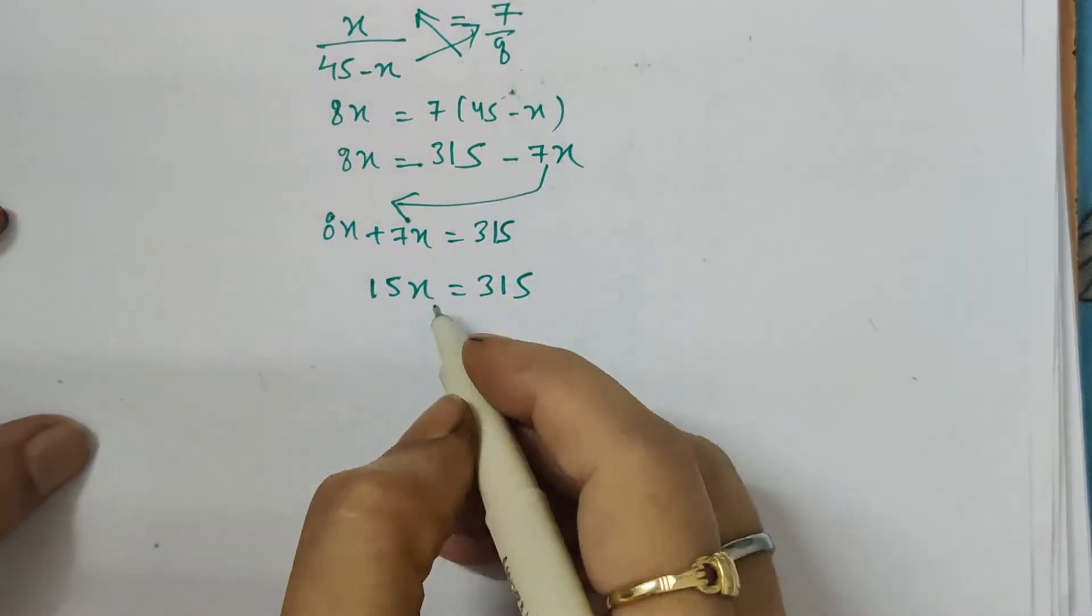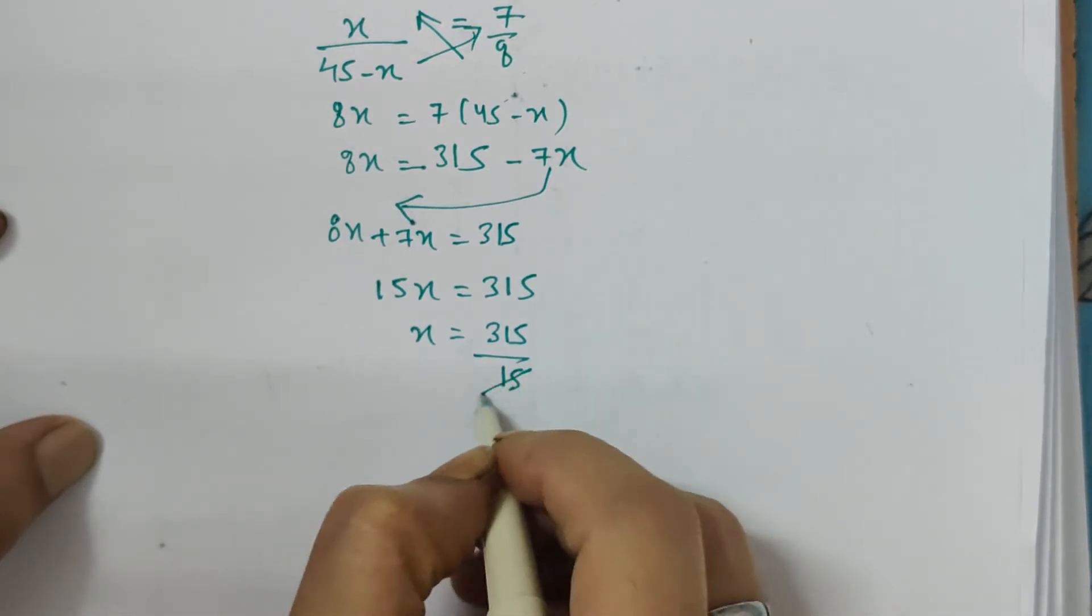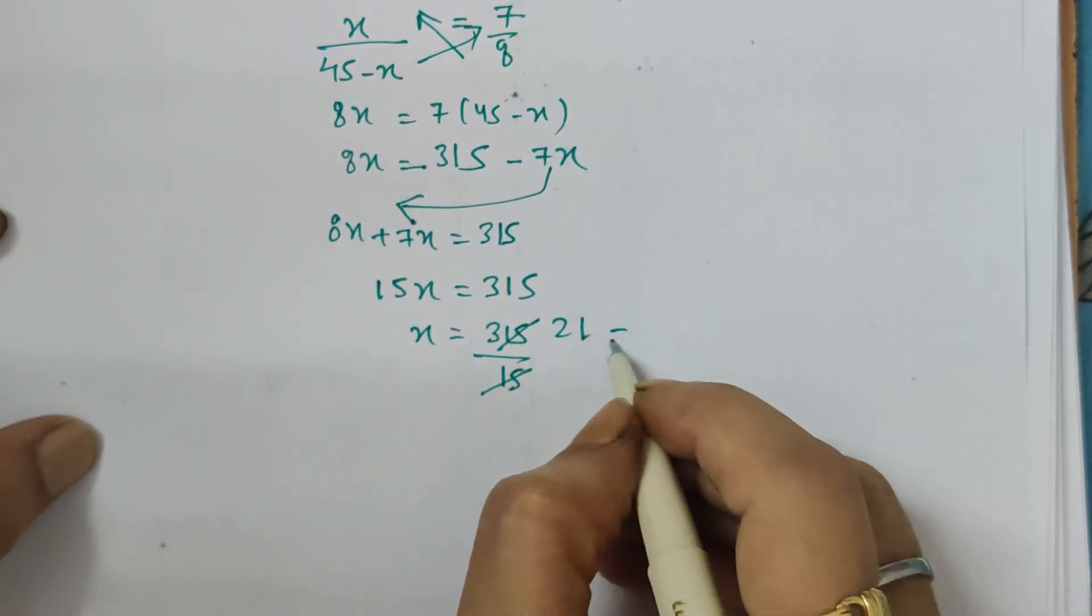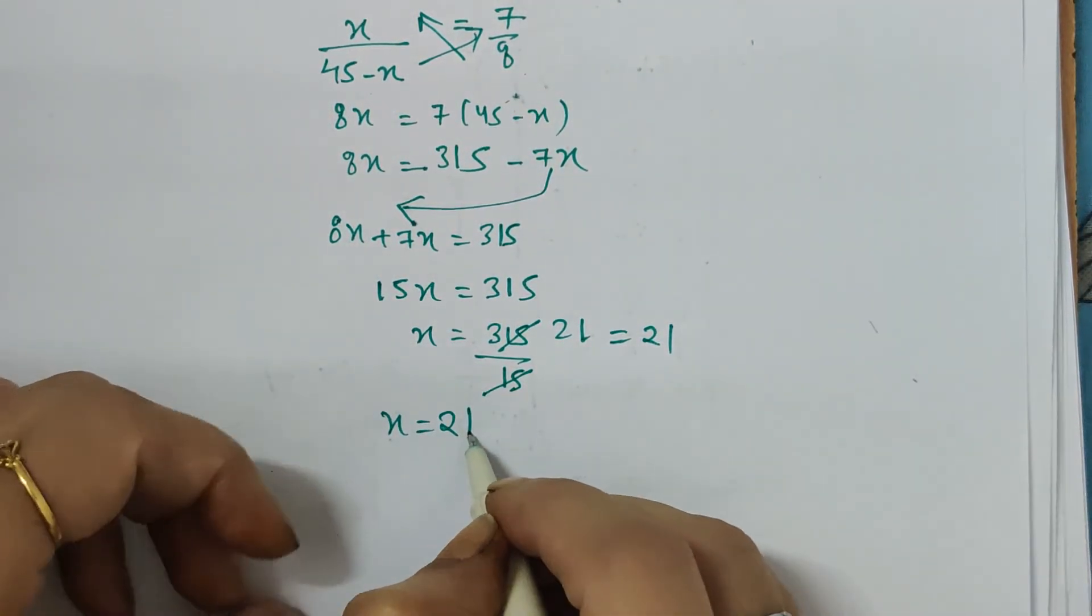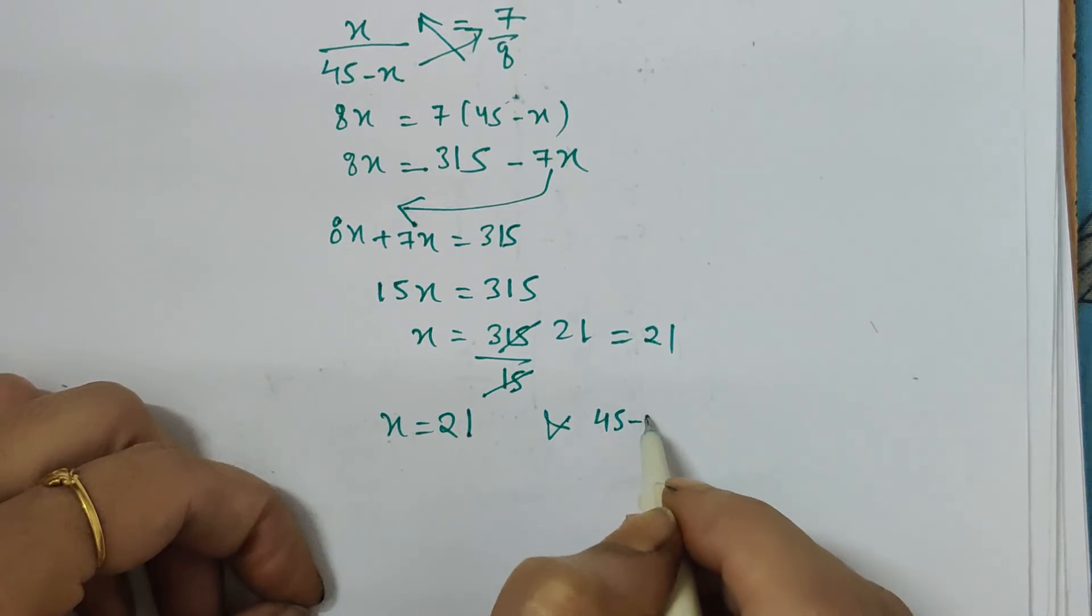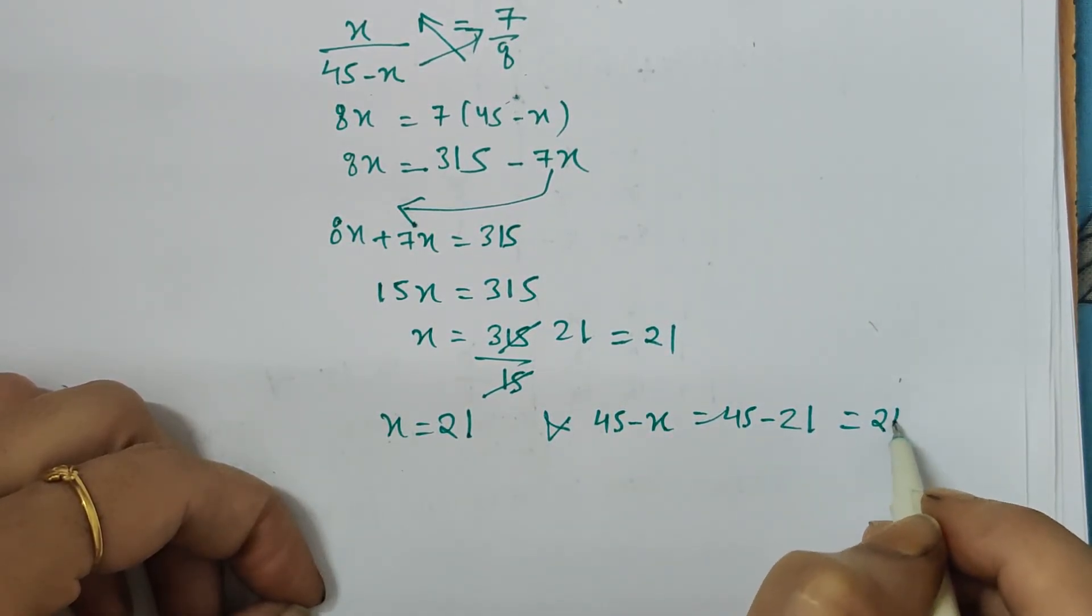So then x is equal to 315 upon 15. 15 times 21 is 315, so one number is x which is 21, and the other number is 45 minus x which is 45 minus 21 gives 24.